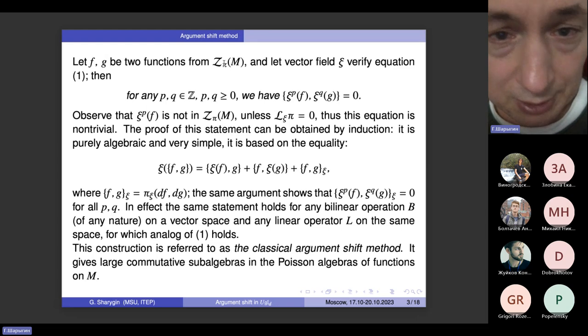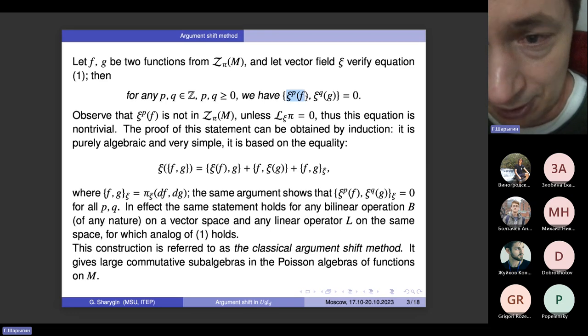So here is this result. Let f and g be two central functions on M, and let psi be the vector field which verifies this condition 1. In that case, for all integer numbers p and q, well positive integers of course, we have this equation. Observe that unless pi of psi, pi sub psi, vanishes identically, these functions are not central anymore, but they continue to commute.